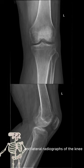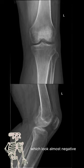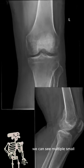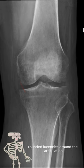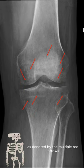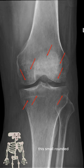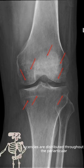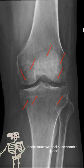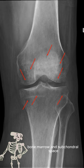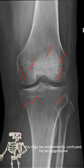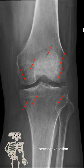Here we have AP and lateral radiographs of the knee which look almost negative. However, if we look closely, we can see multiple small rounded lucencies around the articulation, as denoted by the multiple red arrows. These small rounded lucencies are distributed throughout the periarticular bone marrow and subchondral space. Given the pattern, this may be momentarily confused for an aggressive primitive lesion.